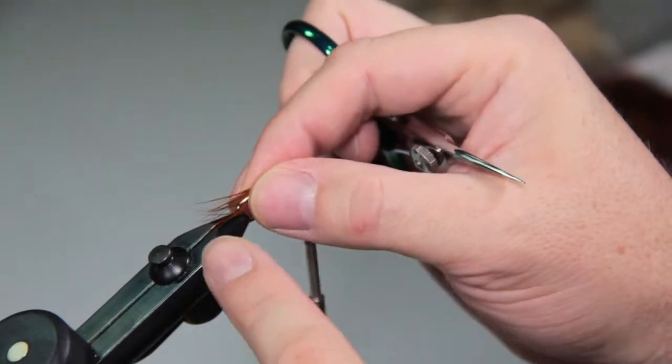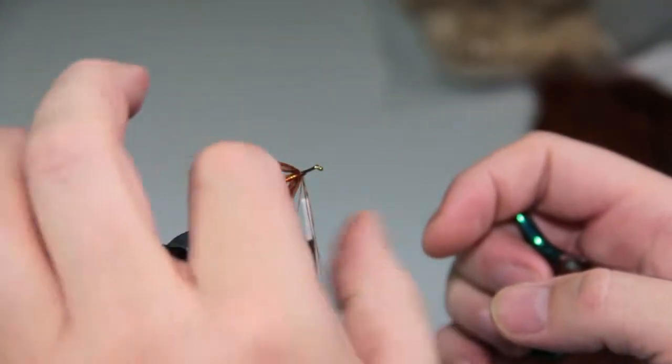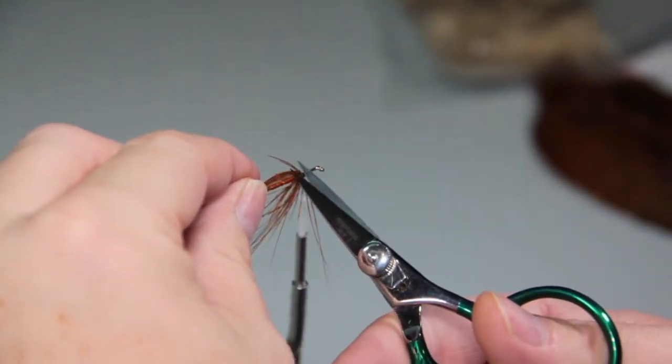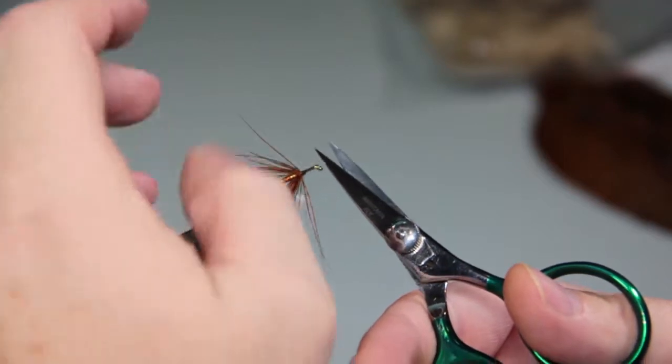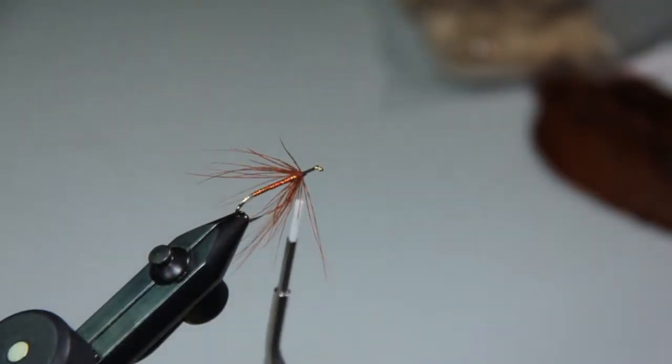So you can see the length on that goes maybe 3/8 or so past the bend of the hook, that's just perfect. And this happens to be a size 6, I generally like these in 6's and 8's, they really fish more like 2's and 6's, or excuse me, 2's and 4's, a little bit longer.